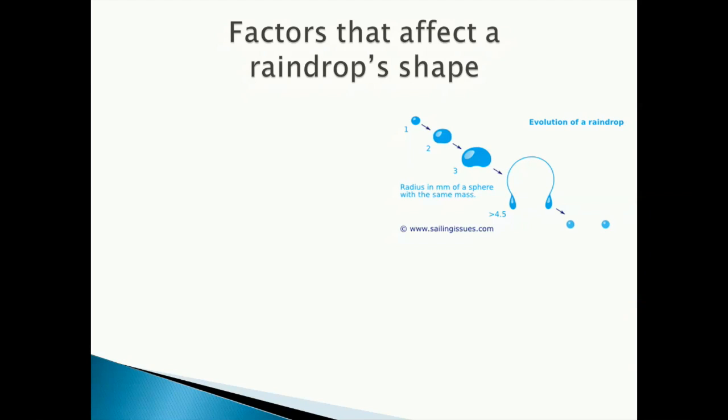Let's talk about factors that affect a raindrop shape. The first is the surface tension of the water. You can think of the surface tension of water as a kind of skin that forms the raindrop shape, much like a water balloon.